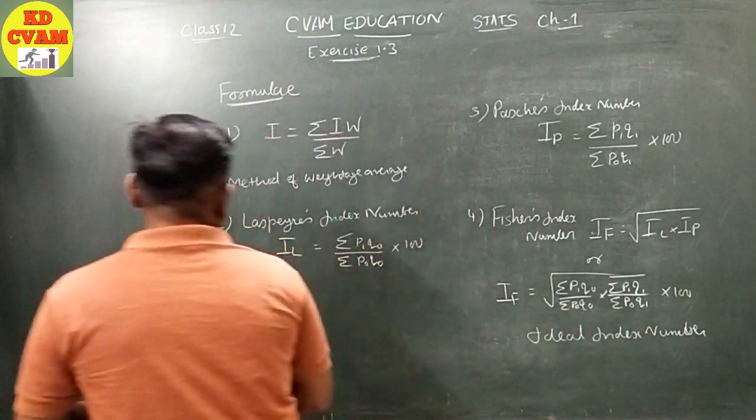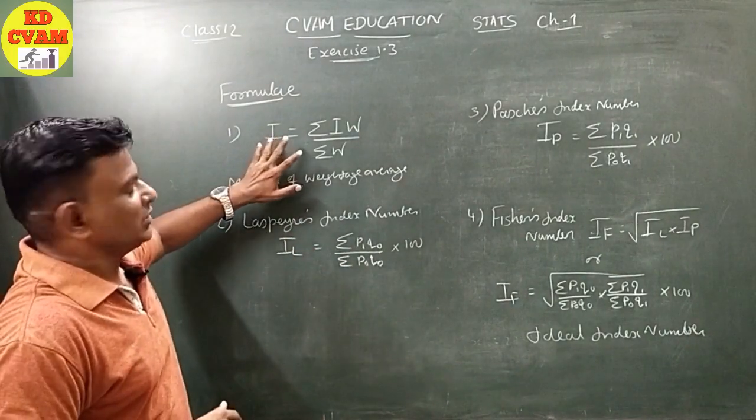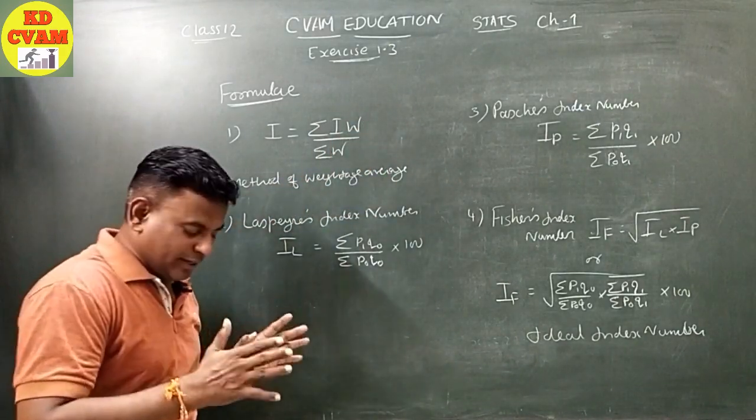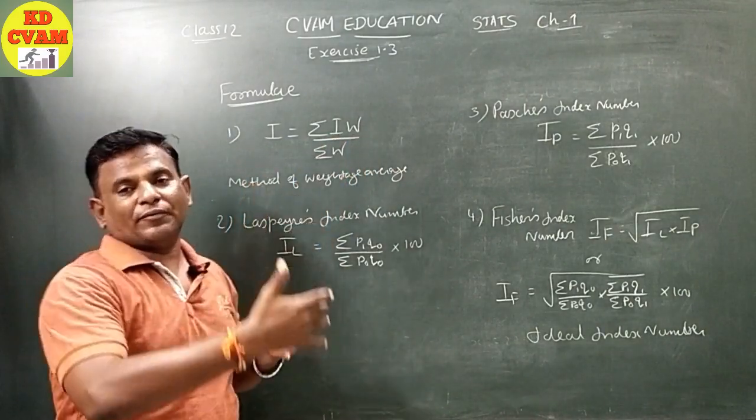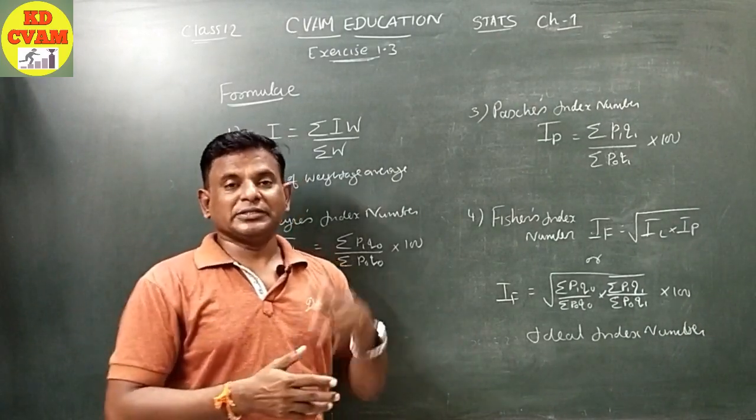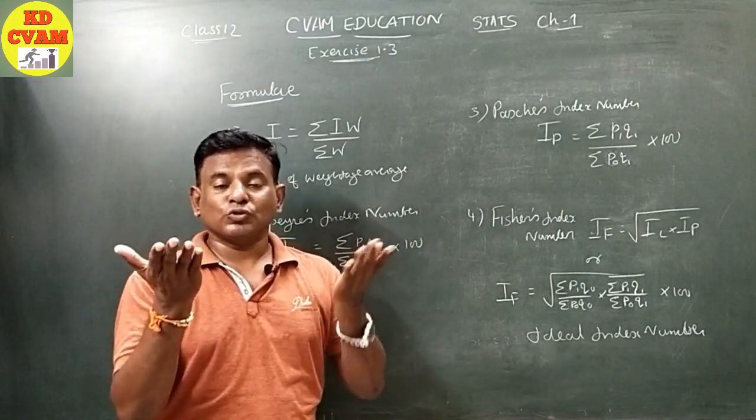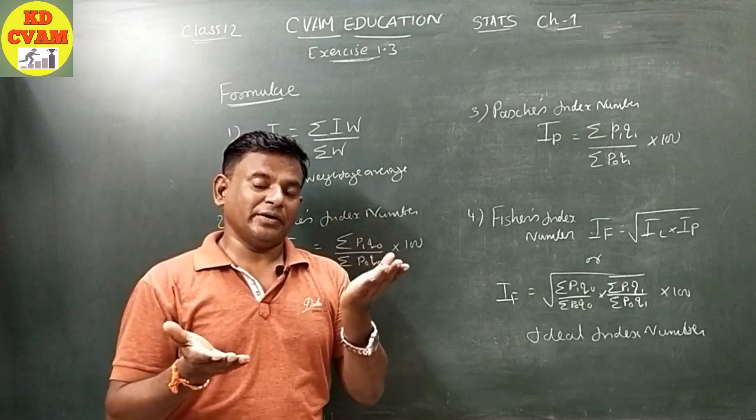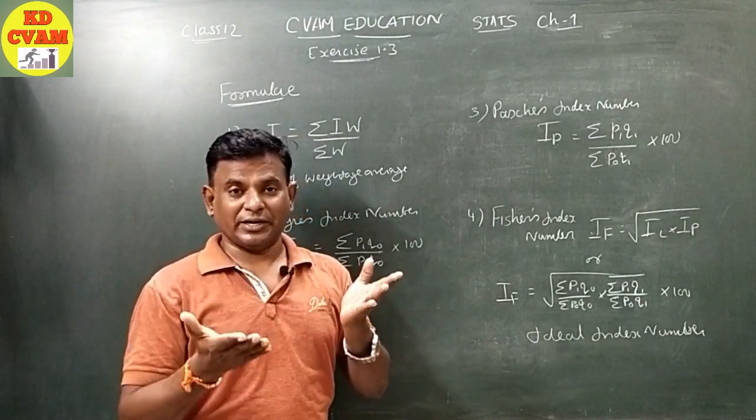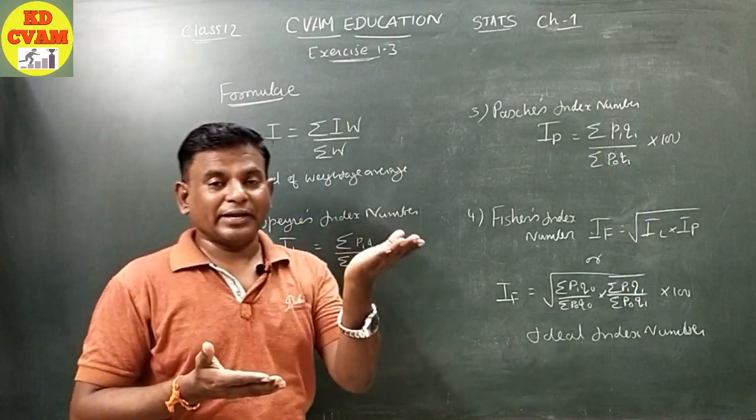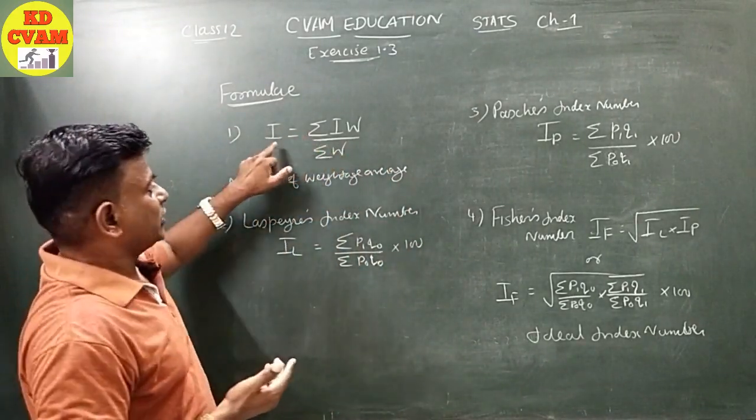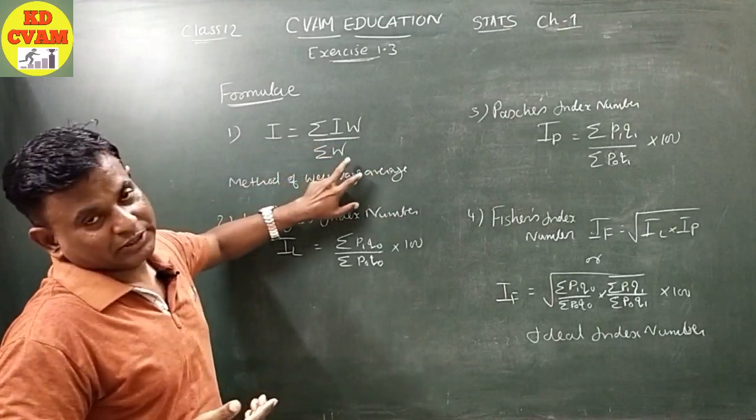First, this is the general index number formula: I equals sigma IW upon sigma W. This is weighted mean. Why weighted mean? Because every item or thing we evaluate does not have the same value. Items like rice (food grain) and cloth have different utility, so each has a different valuation or weight. This is the general index number with weighted mean.